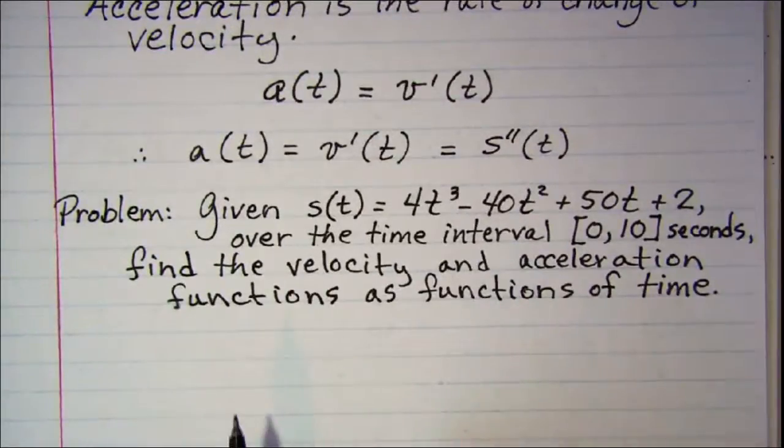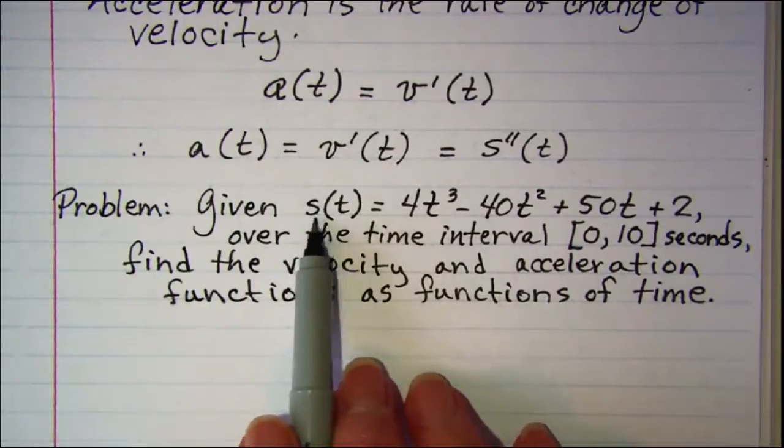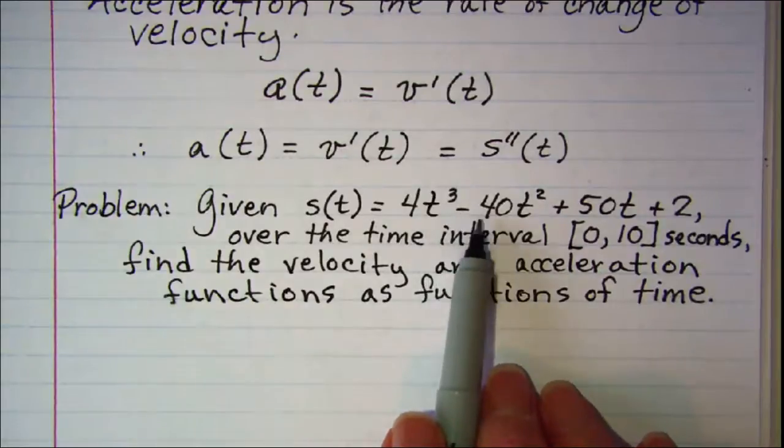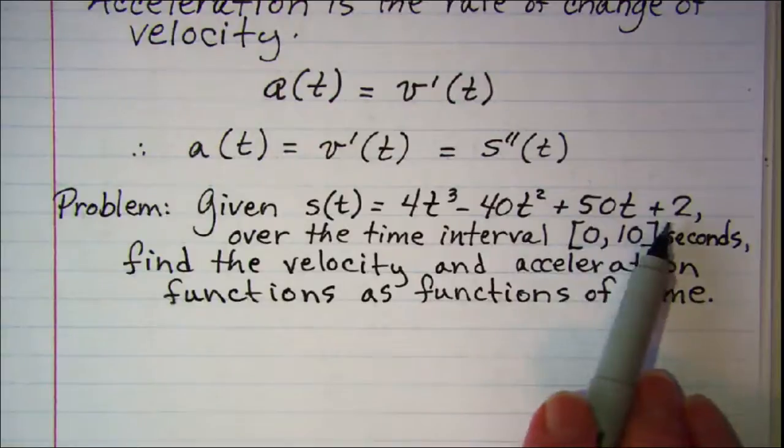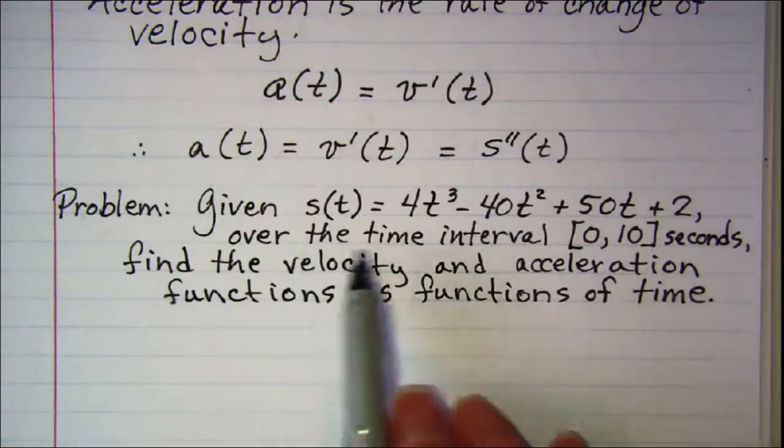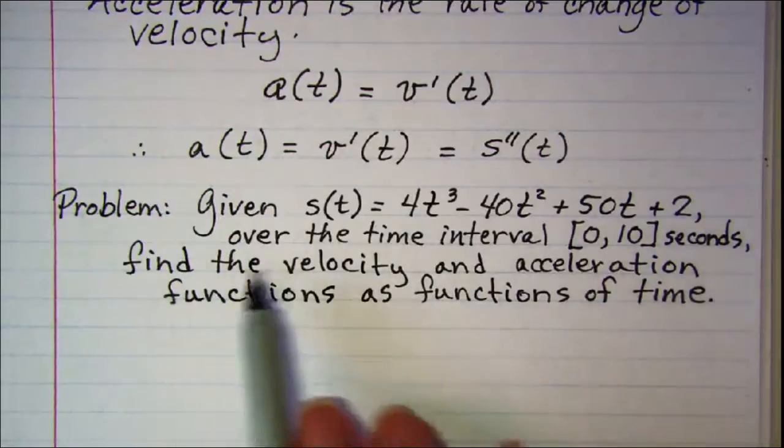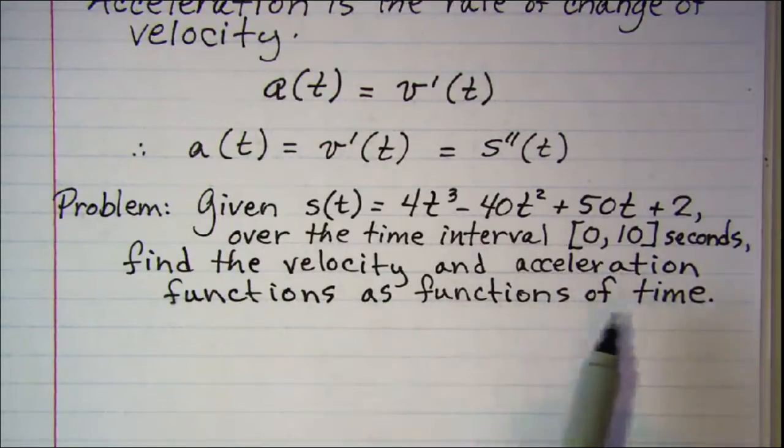Let's look at a problem. Given our position function s equals 4t cubed minus 40t squared plus 50t plus 2 over the time interval from 0 to 10 seconds, find the velocity and acceleration functions as functions of time.